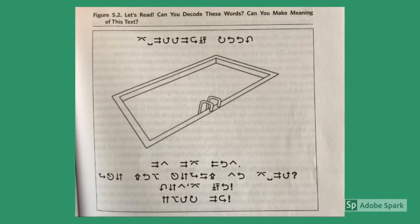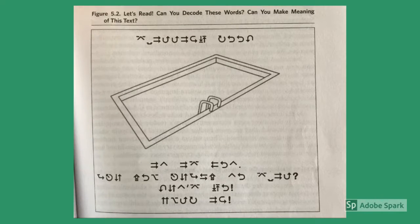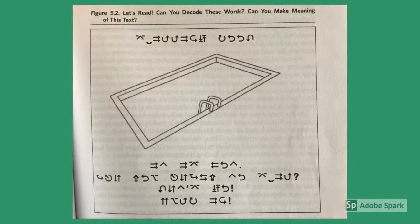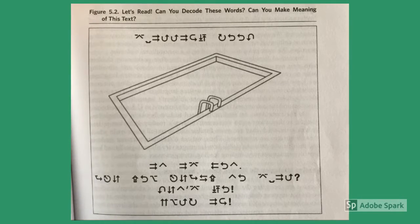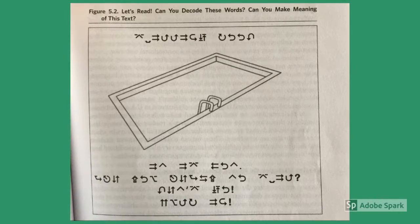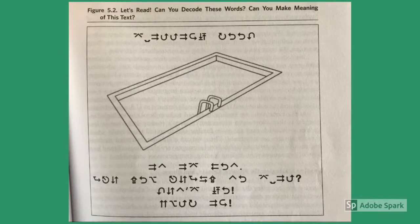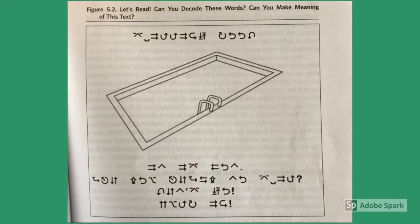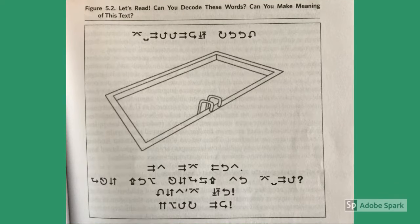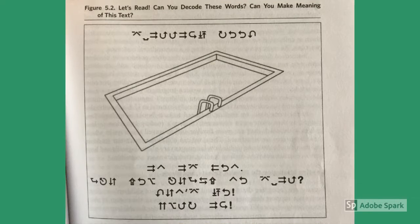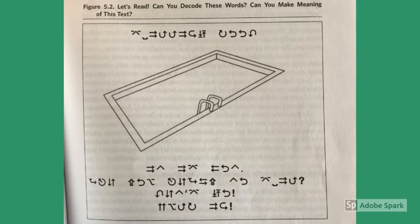The fifth chapter discusses understanding the process children go through when learning to read. To help us understand all of the cues that children use, the authors included an example with symbols instead of words and letters to help us see what clues and cues we use to try to figure it out. It continues by explaining ways that you can structure a reading block in order to support the diverse learning needs of students from diverse backgrounds.